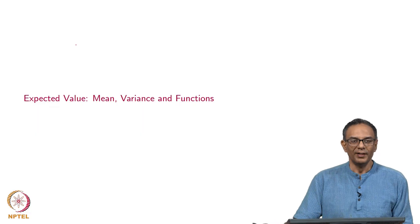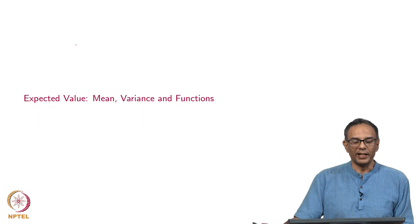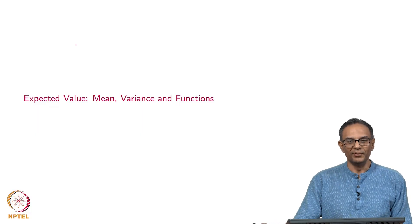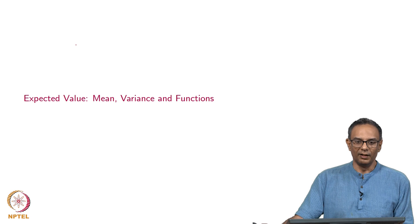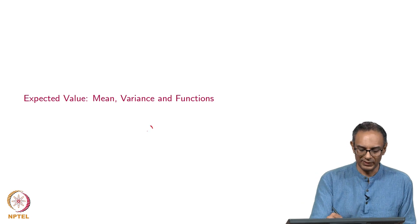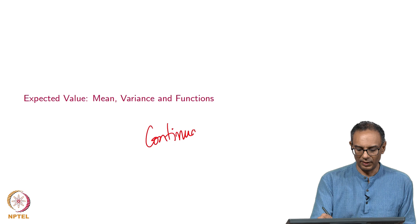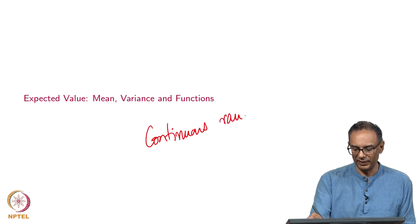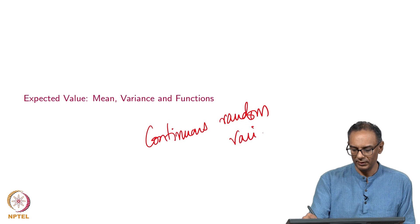Now, we will talk about computing the expected value and variance of continuous random variables. This is essentially for continuous, not discrete. We have already seen the discrete random variable case; we will only look at the continuous random variable.